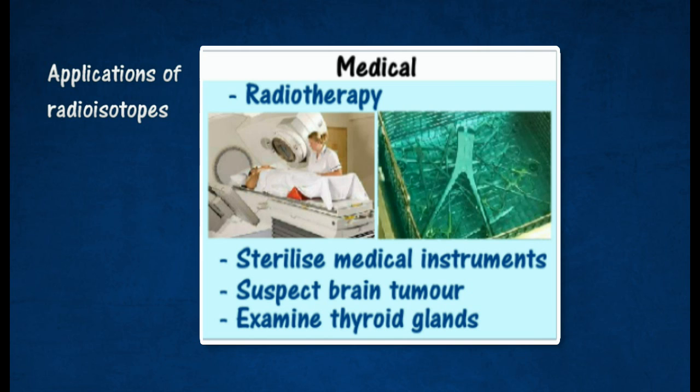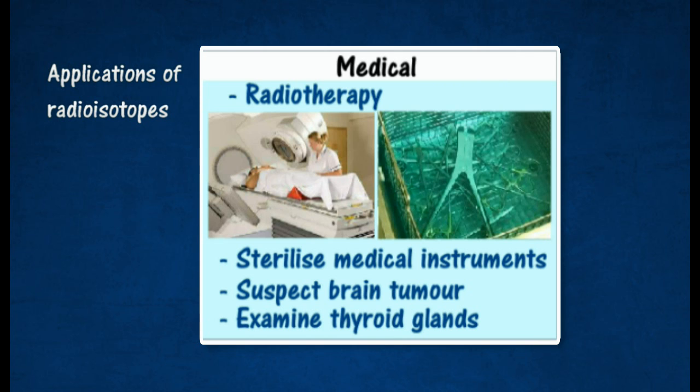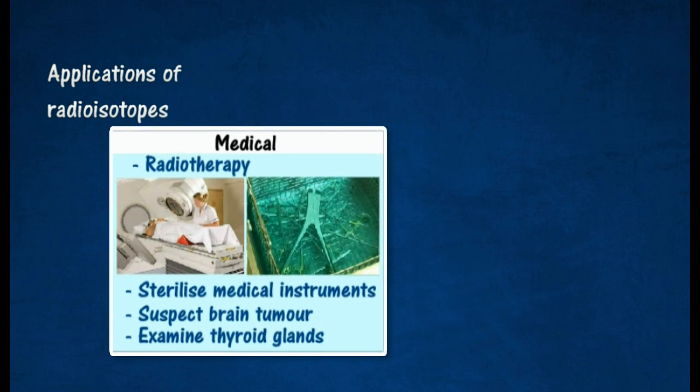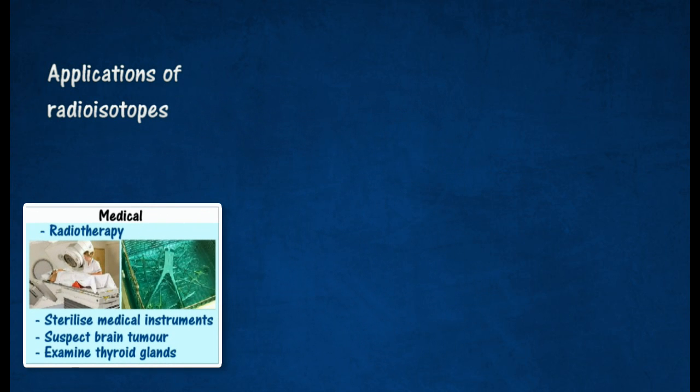Phosphorus-32 is used to detect suspected brain tumors. Iodine-131 is used as a tracer in the body to examine thyroid glands.